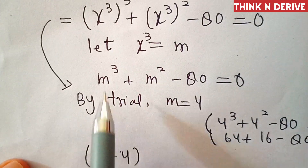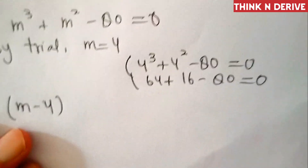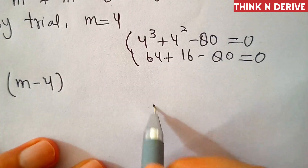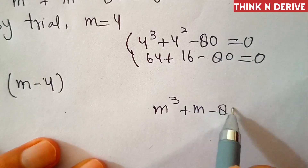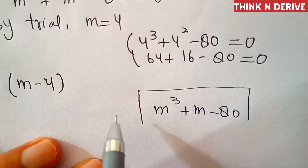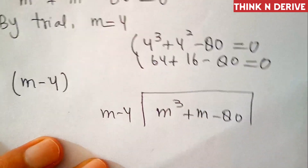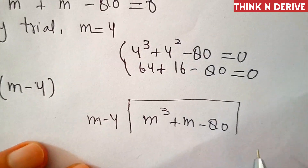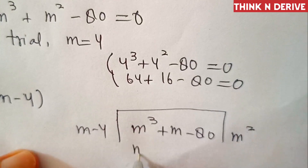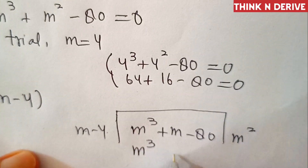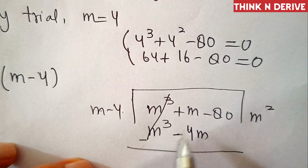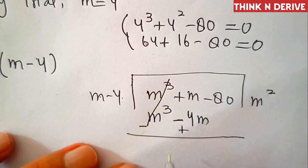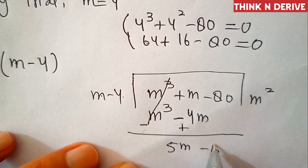Now we'll divide this equation by this factor. So we'll divide m cubed plus m squared minus 80 by m minus 4. We multiply m by m square, so m into m square is m cube, and 4 into m is 4m. Subtracting, this becomes 5m minus 80.